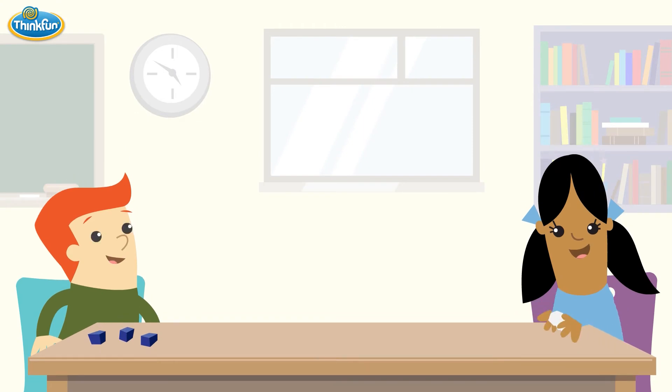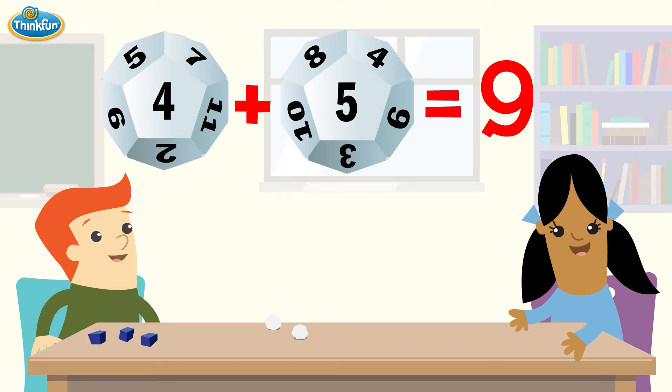Start by rolling the 12-sided target dice. We have a four and a five. By adding them, we get a target number of nine.